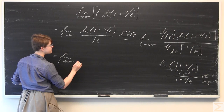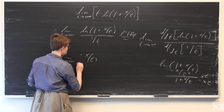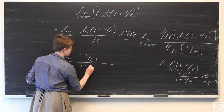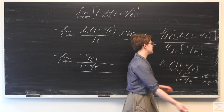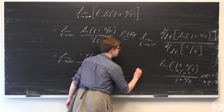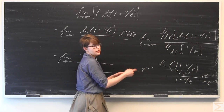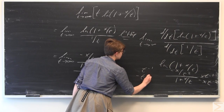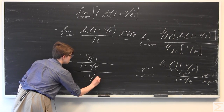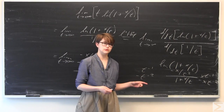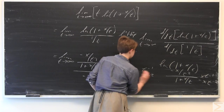So the limit as t goes to infinity has in the numerator: (−x/t²) over (1 + x/t). For the denominator, 1/t equals t⁻¹, and the derivative of that with respect to t is negative t⁻², which equals negative 1 over t squared.